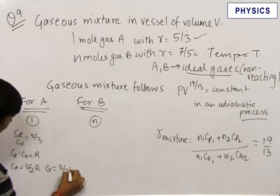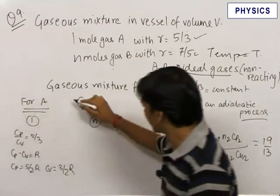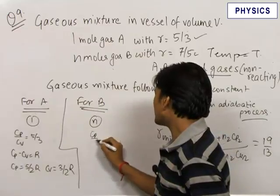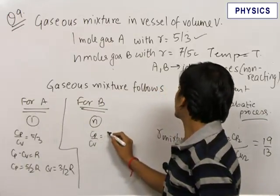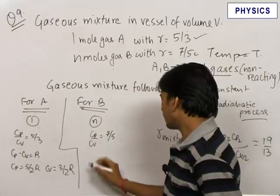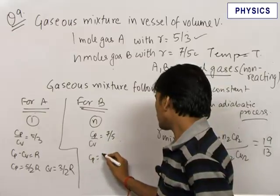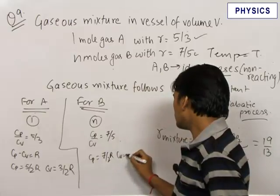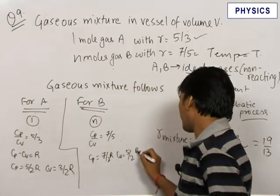For B, Cp by Cv is given to be equal to 7 by 5. Therefore Cp is equal to 7 by 2 R and Cv is equal to 5 by 2 R.